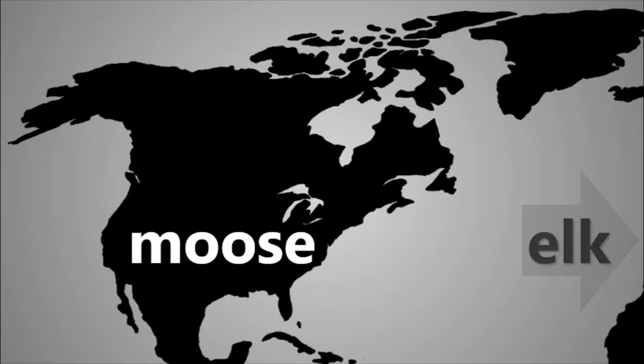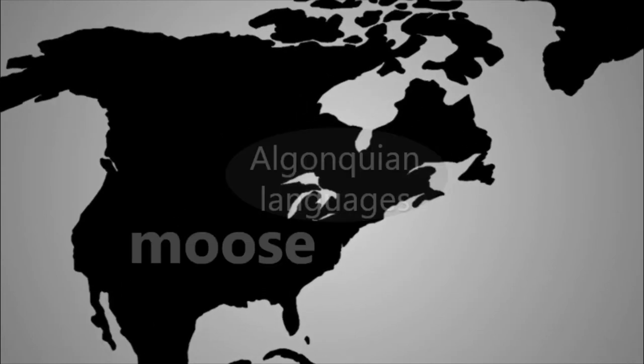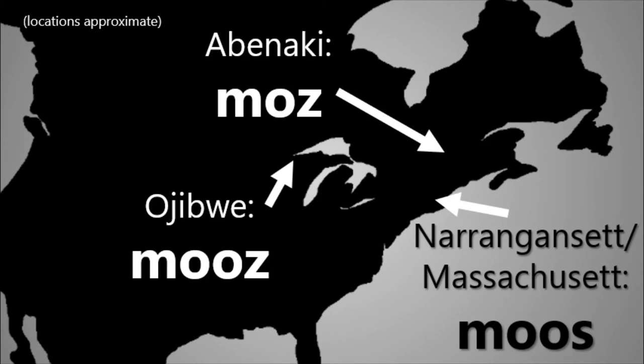Moose comes from an Algonquian language. These languages are a group of American indigenous languages. We're not entirely sure which Algonquian language gave us the word moose, but look at the words for moose in these Algonquian languages and you can see how they could have been adopted into English as moose. In Proto-Algonquian, the common ancestor of the Algonquian languages, the word for moose originally meant 'it strips,' which is a reference to how moose feed, stripping the bark from trees.